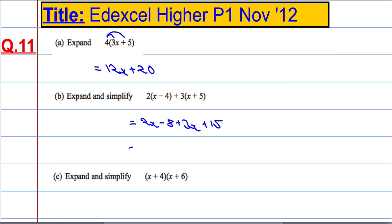And now tidy it up. 2x plus 3x is 5x, collecting like terms. And then minus 8 plus 15 gives me plus 7.